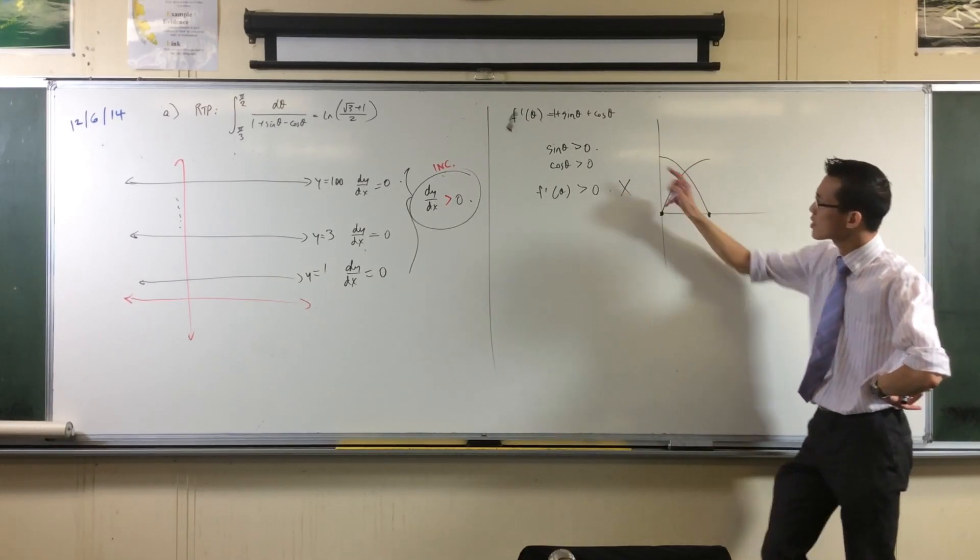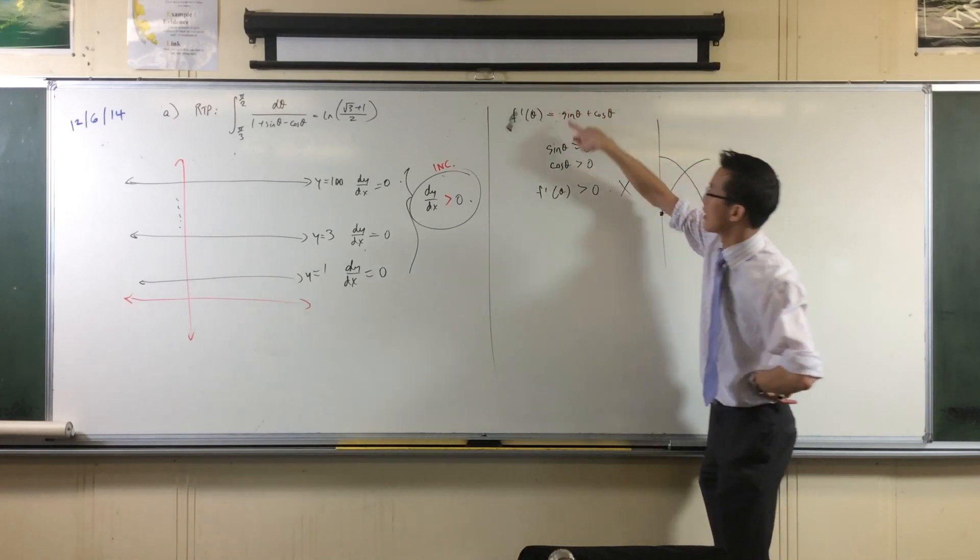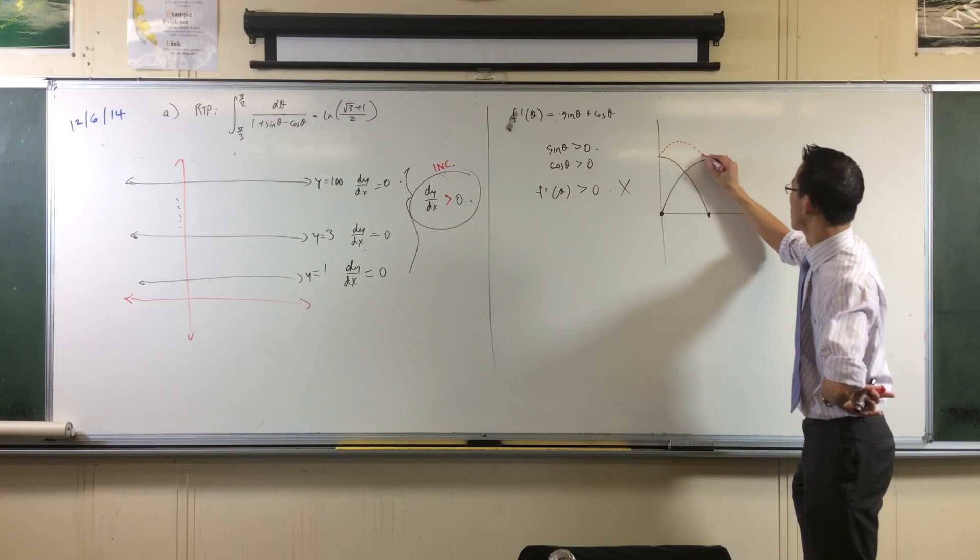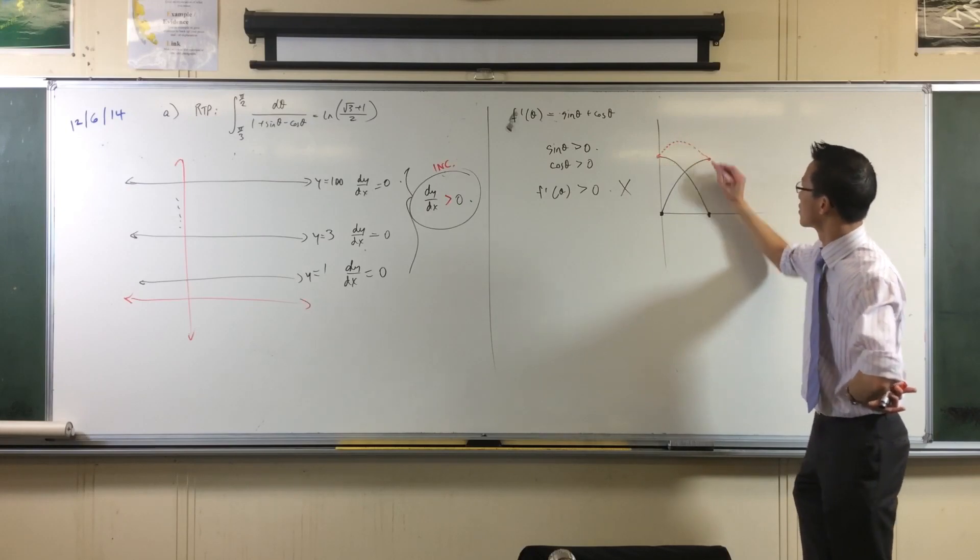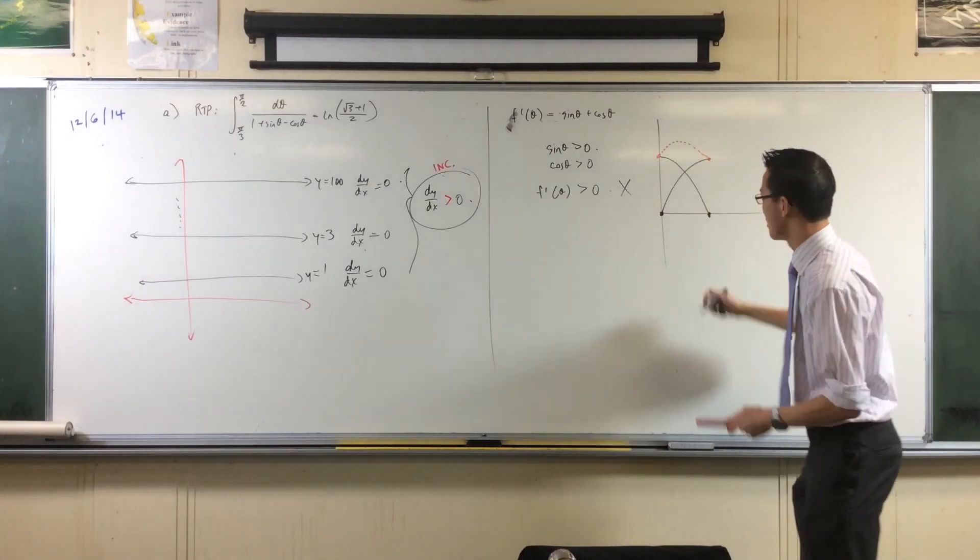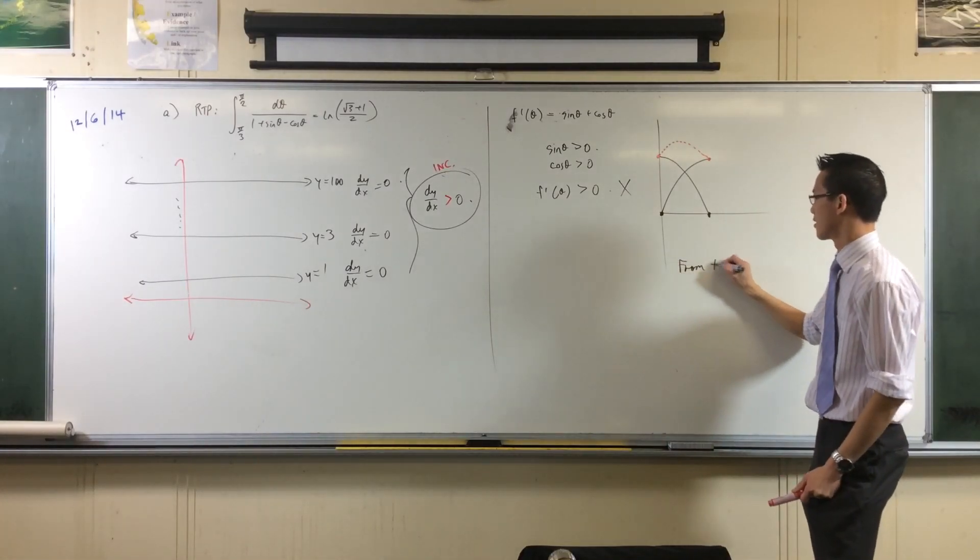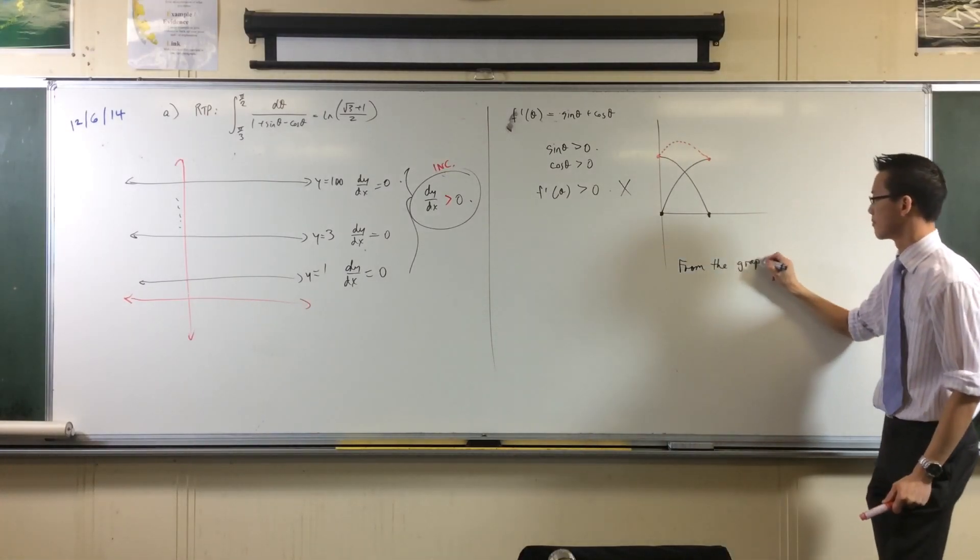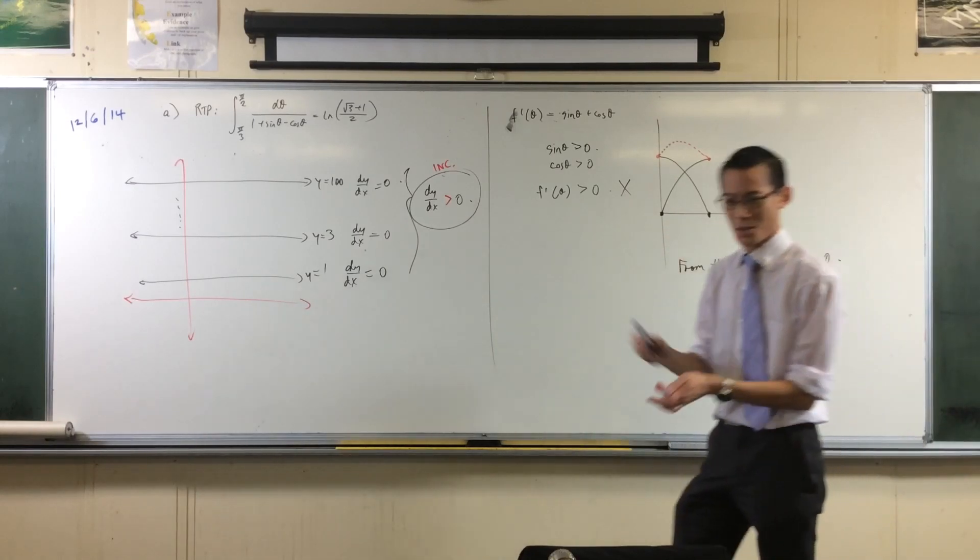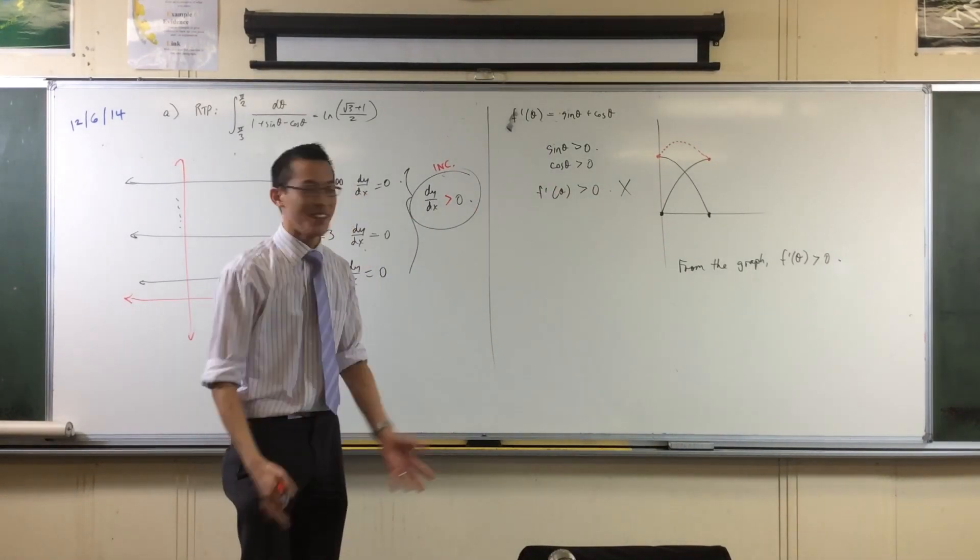So what does f dash look like? Sine theta plus cos theta. Well, it looks like this. So in my solution, I wrote this. See you later, suckers. That's all you had to do.